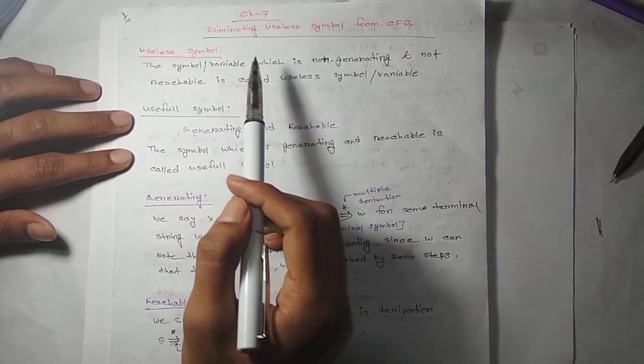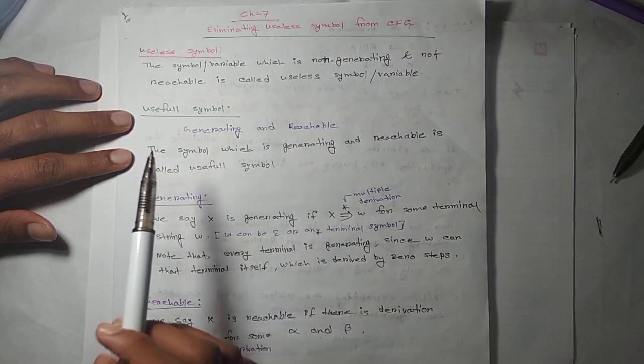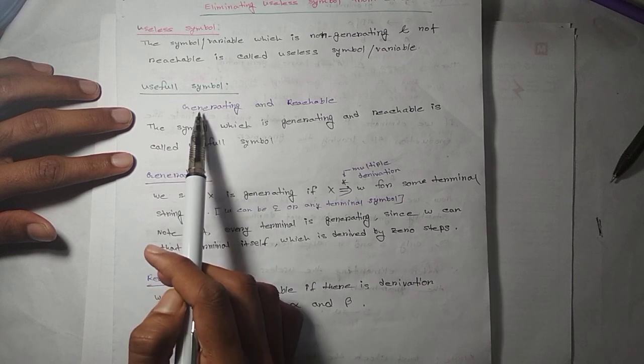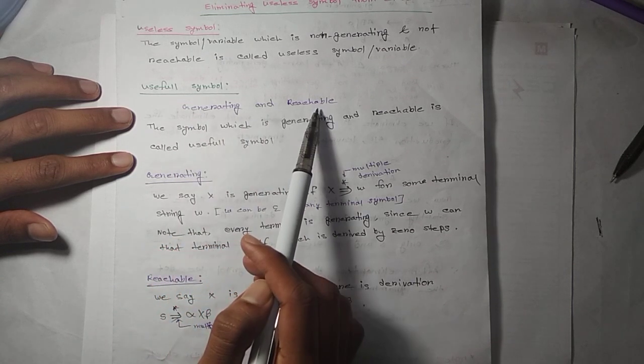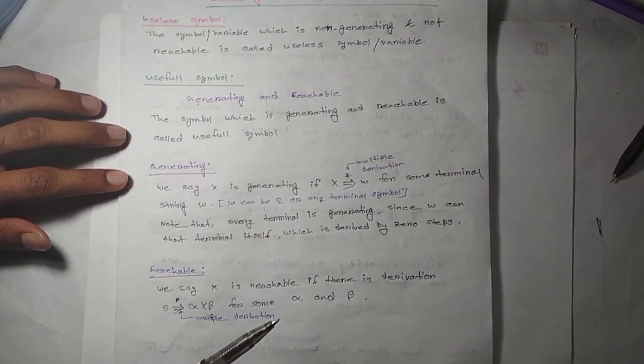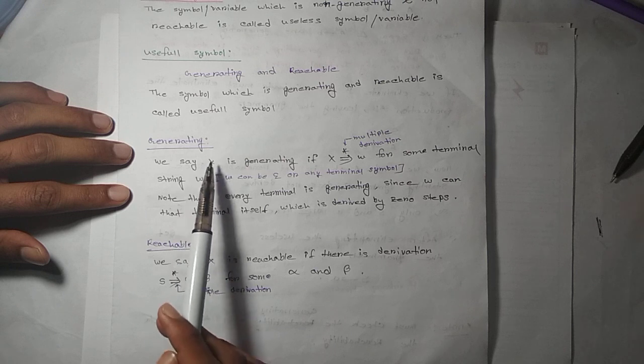In a CFG grammar, we identify which symbols are useful symbols. What is a generating symbol and what is a reachable symbol? Let's see an example.